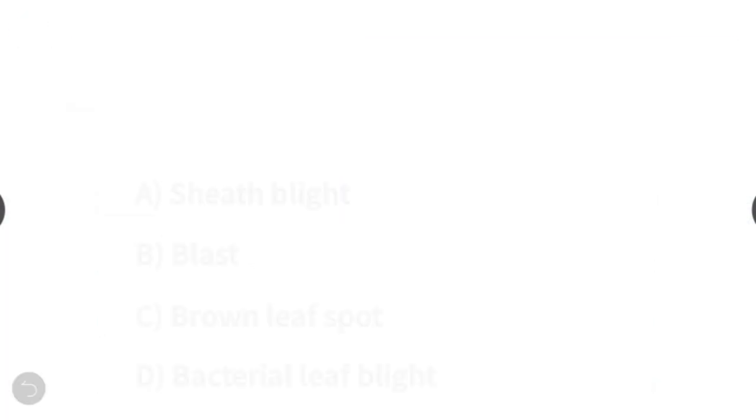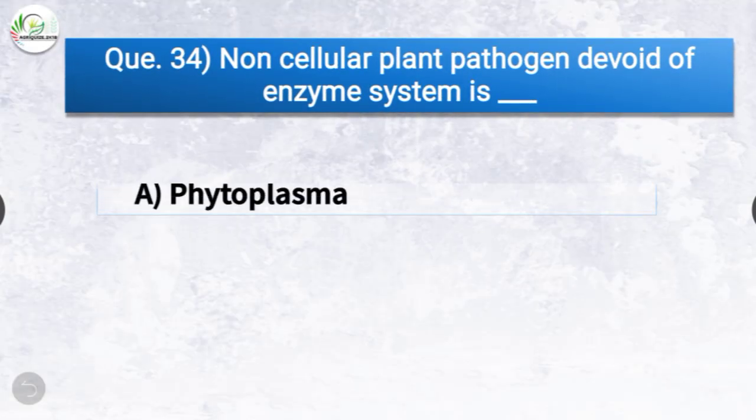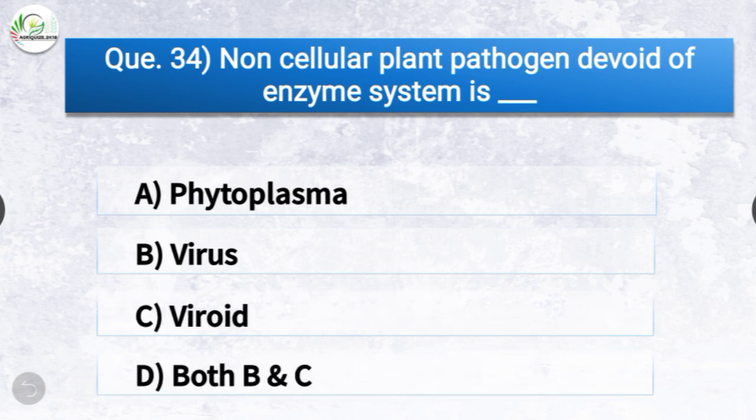Question number thirty-four: Noncellular plant pathogen devoid of enzyme system is dash. The options are phytoplasma, virus, viroid, or both B and C. The correct answer is option D, both B and C — virus and viroid. Noncellular plant pathogens devoid of enzyme system are virus and viroid.